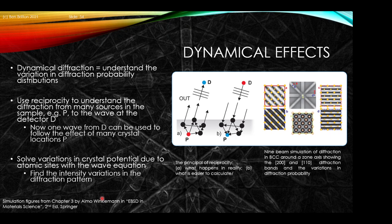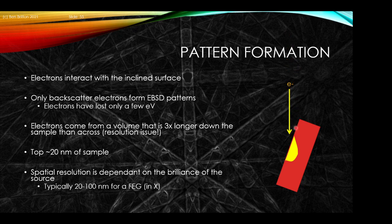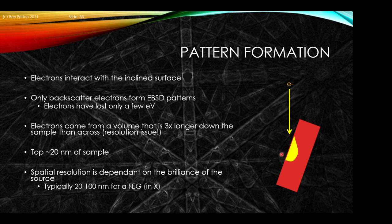One important aspect in the EBSD experiment is that the sample is highly inclined. We have the incoming highly focused probe of electrons near the primary beam energy; these go into the sample, scatter, and we get diffraction from the last events happening very near the primary energy. In this highly tilted configuration — to encourage escape of electrons — we get an elongation of the interaction volume such that resolution is about three times worse down the tilt axis than along it. The backscatter electrons that form our EBSD patterns typically have lost only a few to maybe one kiloelectron volt, and they form from the top roughly 20 nanometers of the sample.